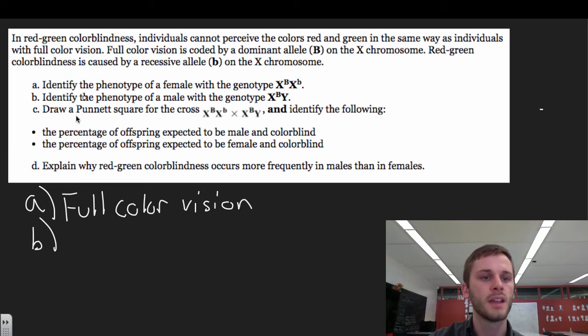For part B, it says identify the phenotype of a male with a genotype X with a B here and Y. So these are the sex chromosomes. So males are typically XY and females are typically XX. So for this guy right here, they have one of the dominant alleles, big B. So that stands for the dominant allele, which is full color vision. So this guy right here, he's going to see fine too. So he's full color vision.